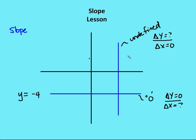Now let's look at the example where we have a vertical line. When we have a vertical line, the value of x never changes — let's say x here looks like about positive 4, so x equals 4 is the equation for the line. Regardless of what y is, x is always 4. So the change in x is 0, and we say that if we divide some value by 0, the result is undefined. It doesn't make sense to divide something by 0 — so we say that slope is undefined.